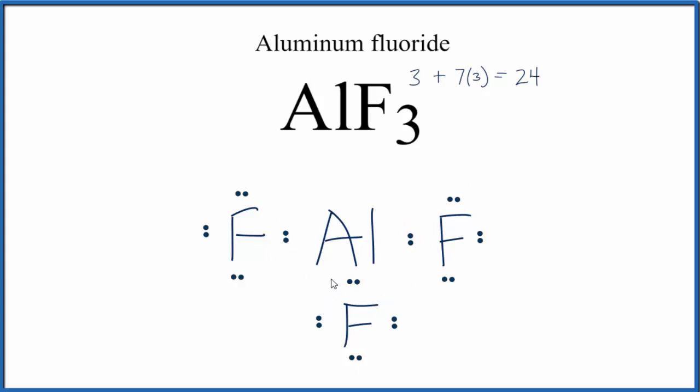That's okay though, because aluminum is an exception to the octet rule. It doesn't need 8 for a full outer shell. And that makes this the complete Lewis structure for AlF3, aluminum fluoride.